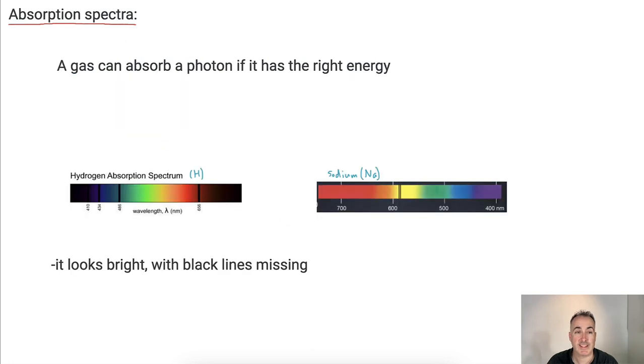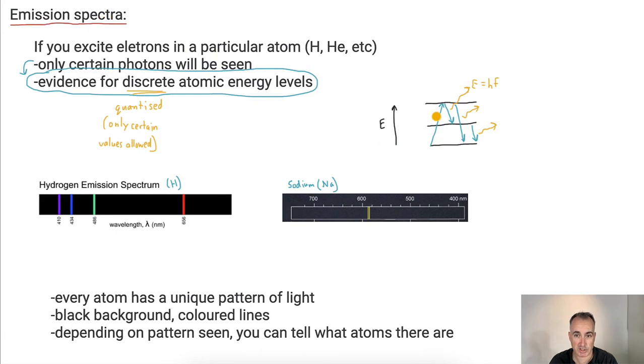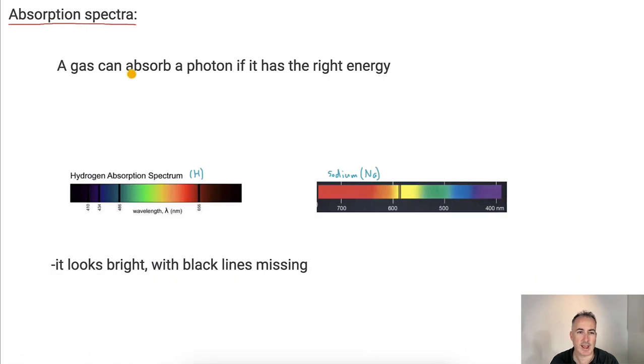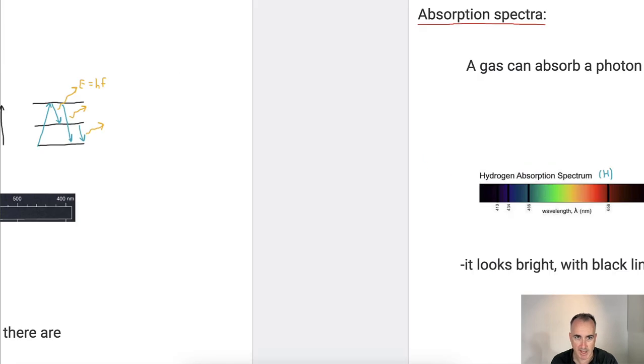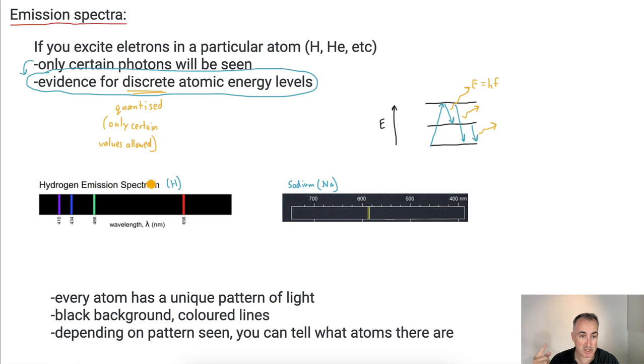So now let's look at the absorption spectrum. So what happens before? Remember, here we were looking at emission, which is where these electrons are emitting photons. Now we've got something different, where a gas can absorb a photon if it has the right energy, again, if it matches these energy levels. So what does it mean to absorb? Well, first of all, I've got the same elements before, hydrogen and sodium, like I had before. Notice the emission spectrum was all black with colored lines where it's emitting those photons, but notice the pattern, and sodium has this double line.